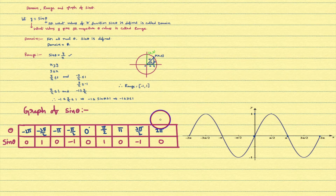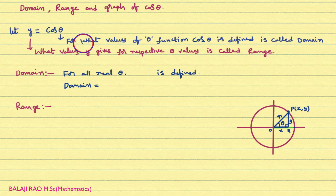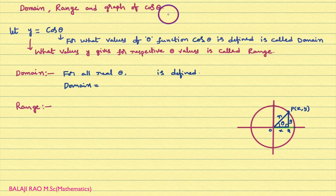Finally, I will conclude what we learned in this class. We learned that domain of sine function is all real numbers, range of sine function is closed interval minus 1 comma 1, and we learned the graph of sine function — it is important to memorize this graph. In this class, we will learn domain, range and graph of cosine function.